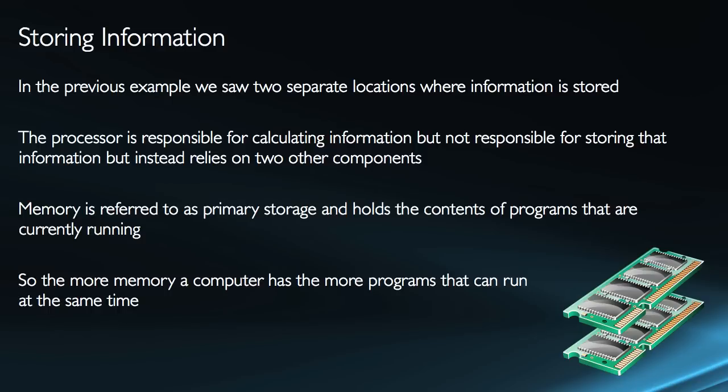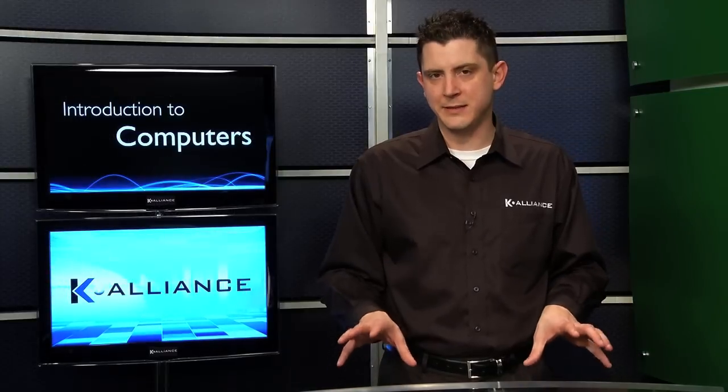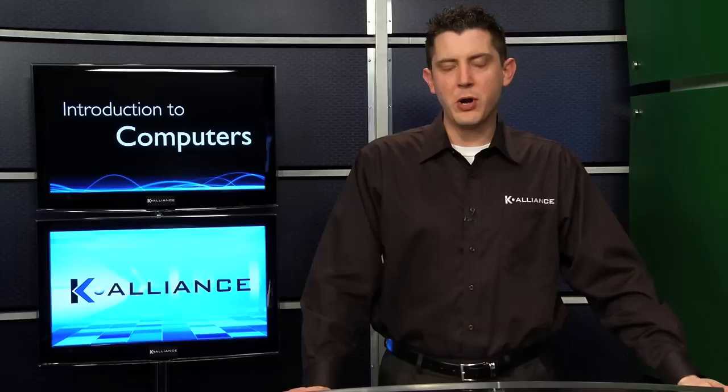Memory is the first component, and it's referred to as primary storage. Memory holds the contents of programs that are currently running, so the more memory your computer has, the more programs you can run at the same time. It's a very common misconception to say you were unable to download a program or copy a file because you didn't have enough memory — that's actually an inaccurate statement.